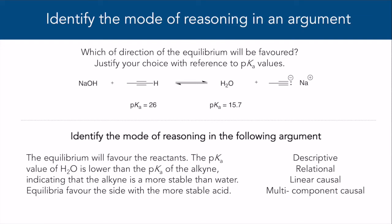This is a linear causal argument. The claim — the equilibrium will favor the reactants — is connected to evidence about pKa values and the stability of acids. The reasoning is causal because it describes how and why stability is linked to the direction of equilibrium.